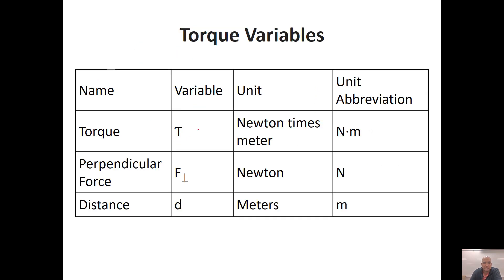Some of the variables we're going to use: torque uses a little tau symbol and is measured in newton-meters. Perpendicular force is the force at a 90-degree angle from the fulcrum, measured in newtons (capital N). I used this same symbol for perpendicular force previously in inclined planes. Distance is represented by D, measured in meters.